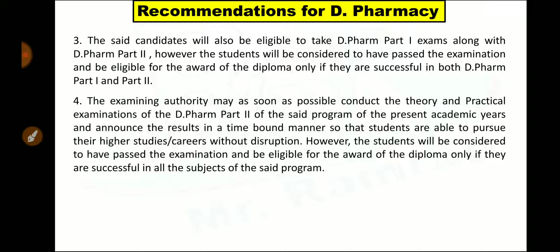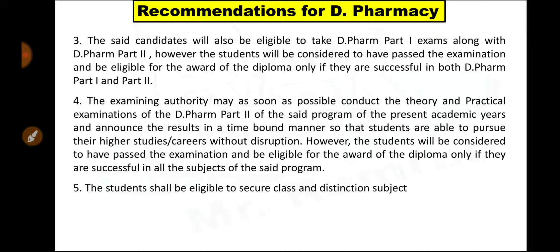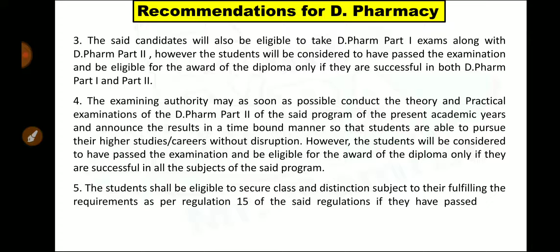If you pass in all the subjects, then you will get the diploma. The student shall be eligible to secure class and distinction subject to fulfilling the requirements as per Regulation 15 of the said regulations, if they have passed their examinations in a single attempt. Like in B Pharmacy, if you get more than 60% marks you are in first class; if you get more than 75% marks you will get distinction. For D Pharmacy, go through Regulation 15 in the document carefully.